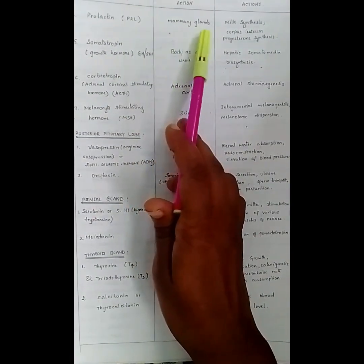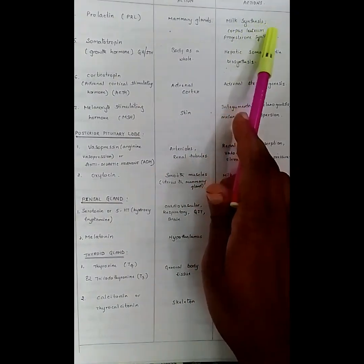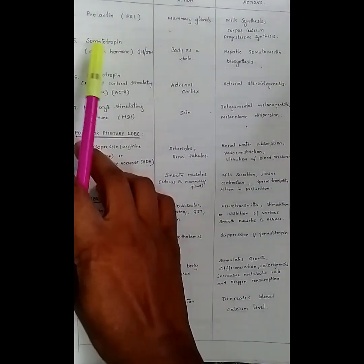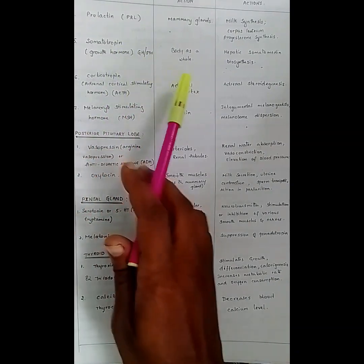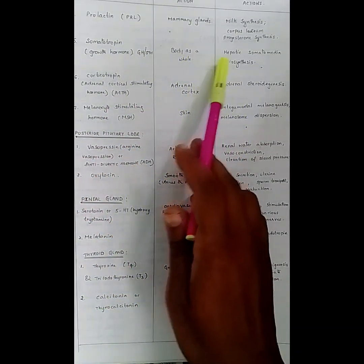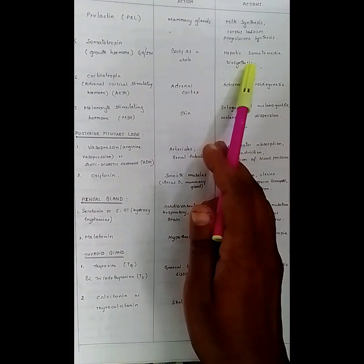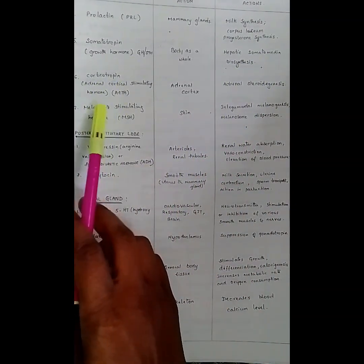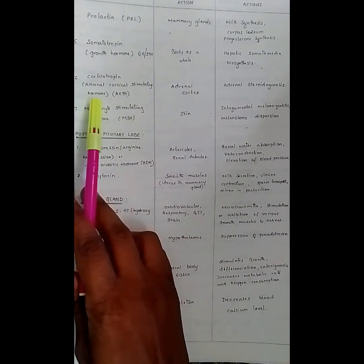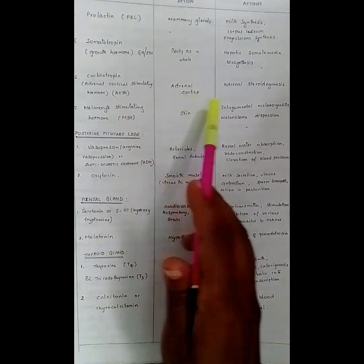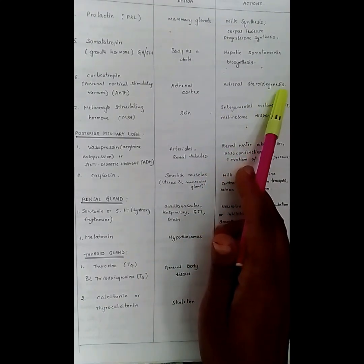Prolactin is released in the mammary glands and is helpful in milk synthesis and corpus luteum progesterone synthesis. Somatotropin is released in the whole body and is helpful in hepatic somatomedin biosynthesis. Corticotropin or adrenal cortical stimulating hormone (ACTH) — its site of action is in the adrenal cortex and is helpful in adrenal steroidogenesis.